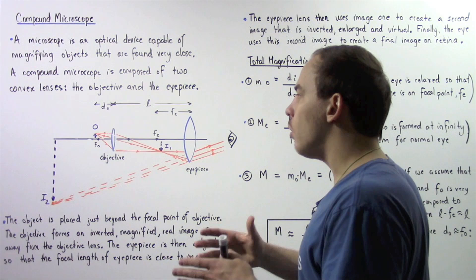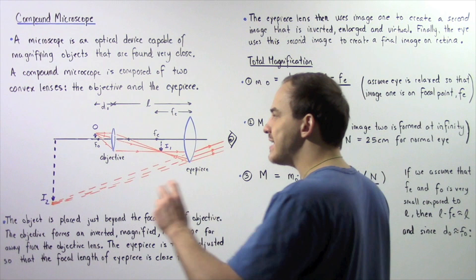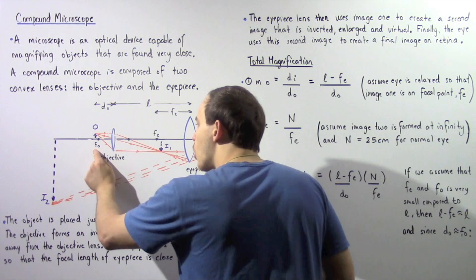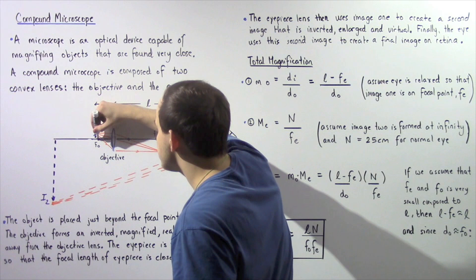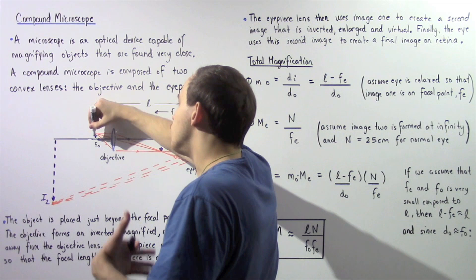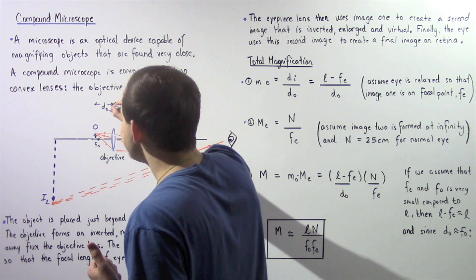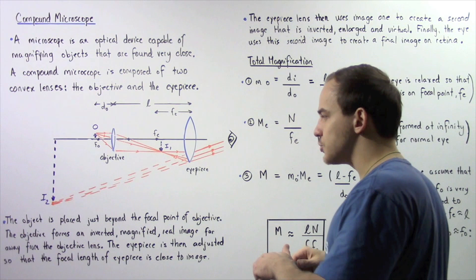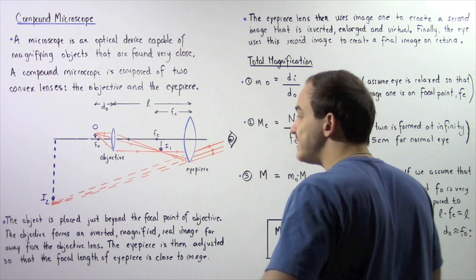The objective lens essentially inputs all the rays of light that bounce off our object. We take a small object, shown by the small purple arrow labeled O, and place it just beyond — very close to — the focal point of the objective lens. For approximation purposes, we can assume the object distance is approximately equal to the focal length of the objective.